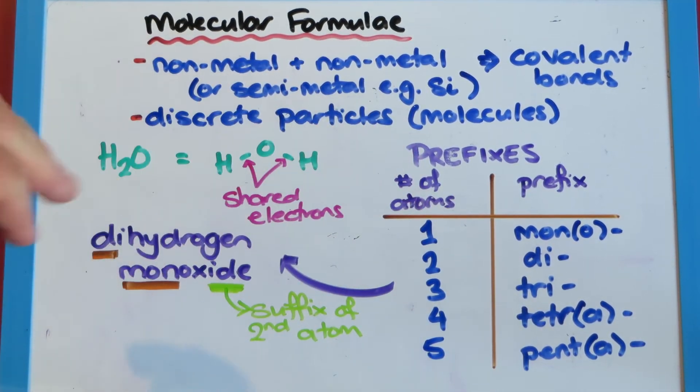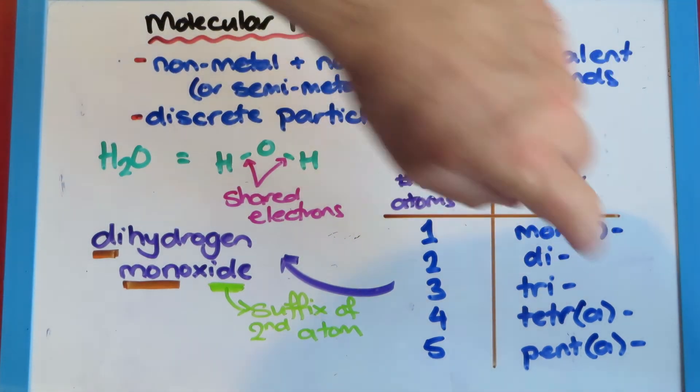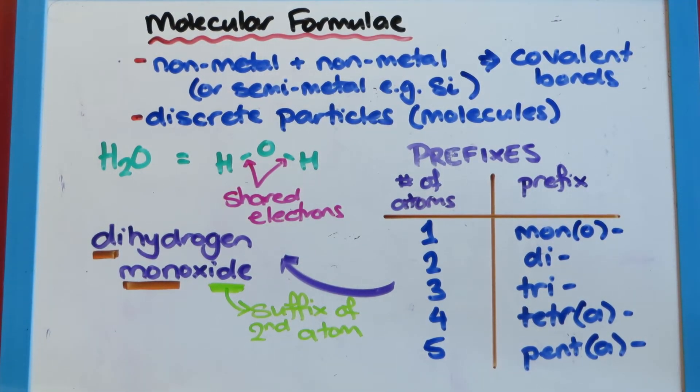So one is mon or mono. Two is di, so dihydrogen we had here. Three is tri, which sort of makes sense; we know a triangle has three sides. Four is tetra. So if it was oxide, it would be tetroxide. You take the a off, which is why I put it in brackets, because oxide starts with a vowel.